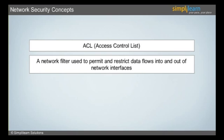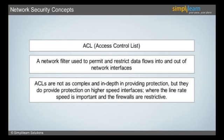ACLs are used for many reasons. The primary reason is to provide a basic level of security for the network. ACLs are not as complex and in-depth in providing protection, but they do provide protection on higher speed interfaces where the line rate speed is important and the firewalls are restrictive.